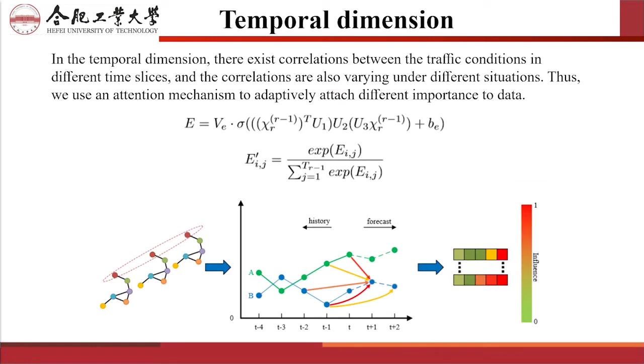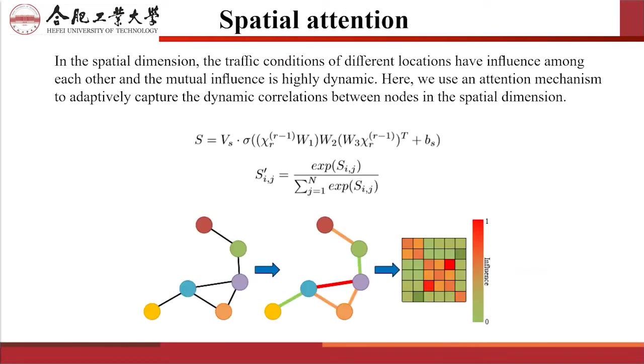In the temporal dimension, there exist correlations between traffic conditions in different time slices, and the correlations are also varying under different situations. Thus, we use an attention mechanism to adaptively attach different importance to data. In the spatial dimension, the traffic conditions of different locations have influence among each other and the mutual influence is highly dynamic. Here, we use an attention mechanism to adaptively capture the dynamic correlations between nodes in the spatial dimension.